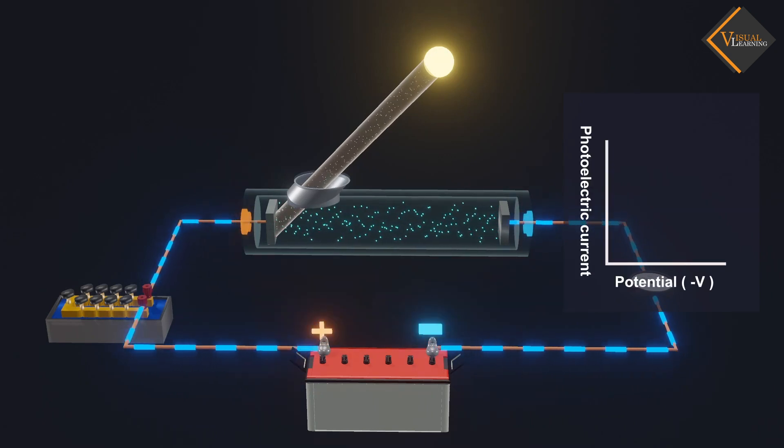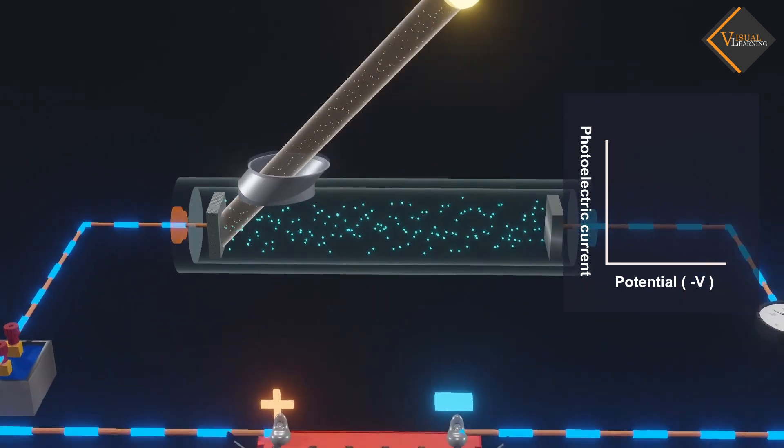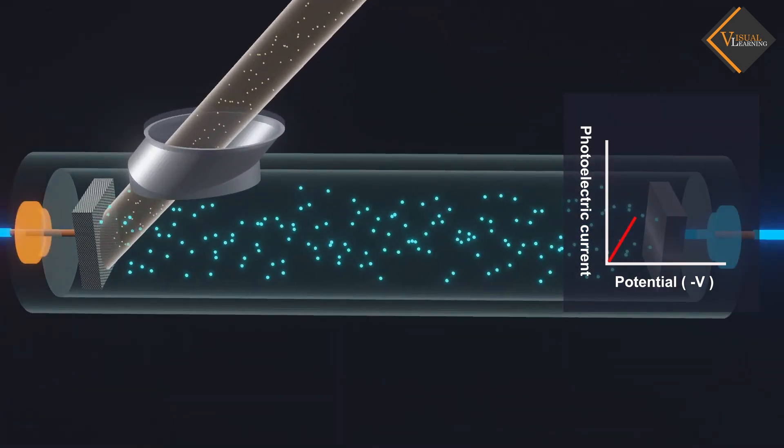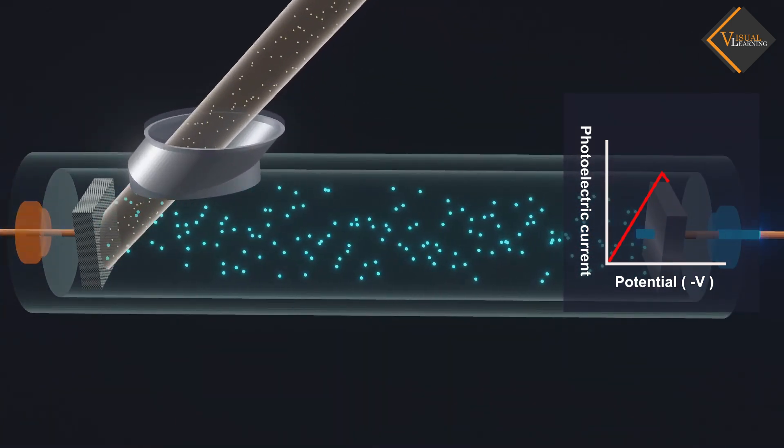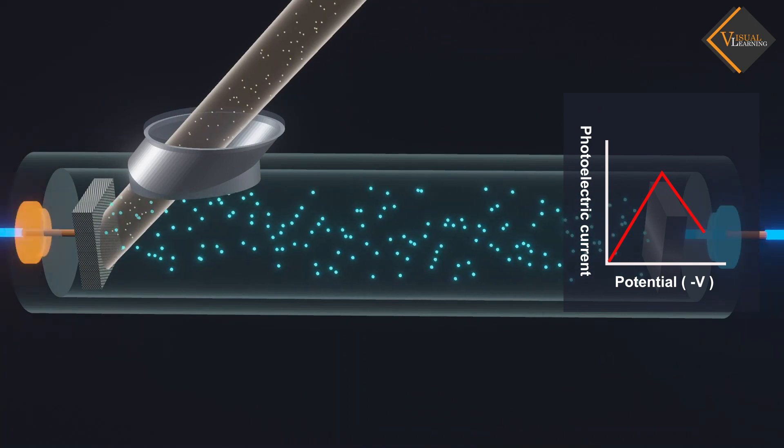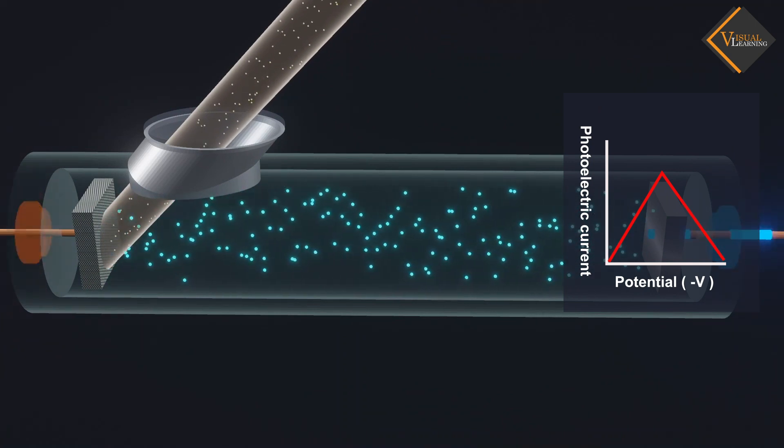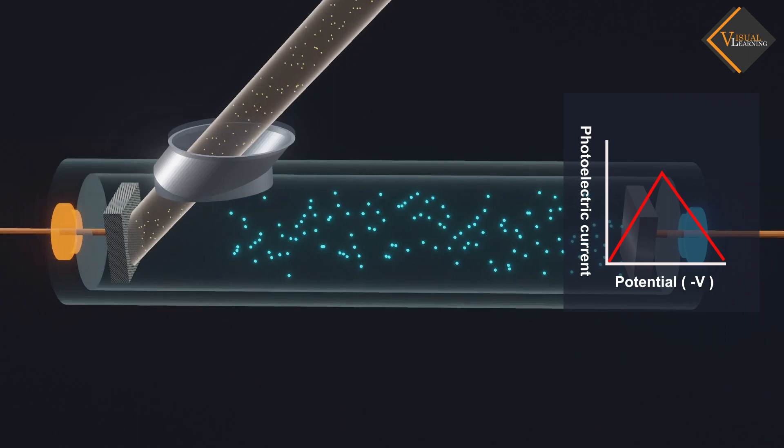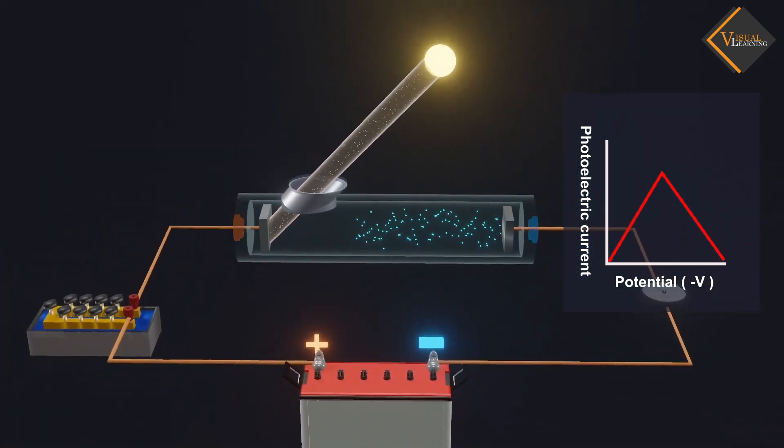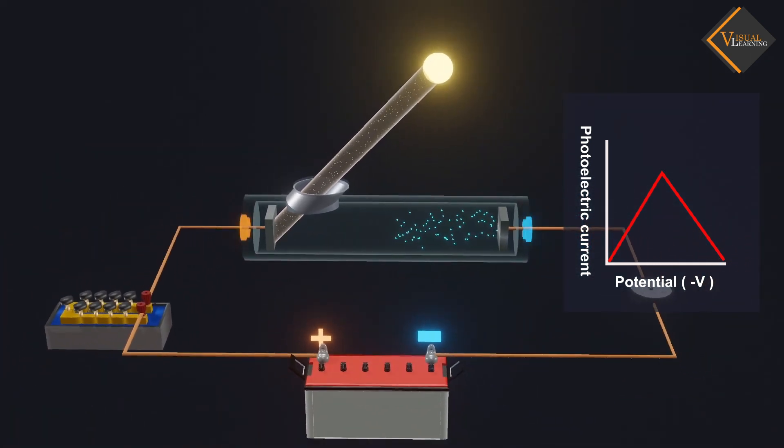If we reverse the voltage direction, we observe that the photoelectric current starts to decrease. Moreover, if we keep increasing the reverse voltage continuously, the photoelectric current reaches a point where it becomes zero. This negative voltage is known as the stopping potential.